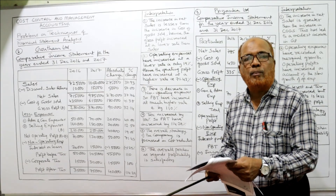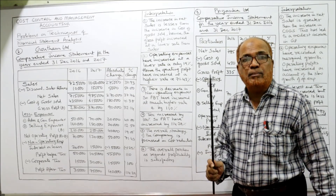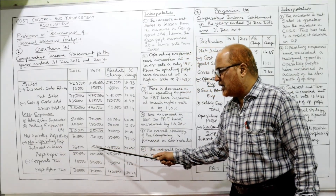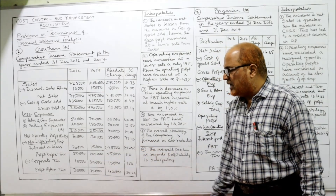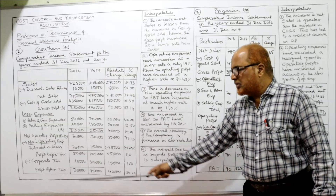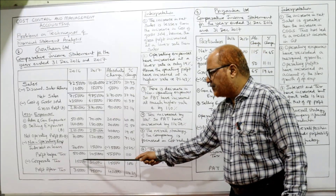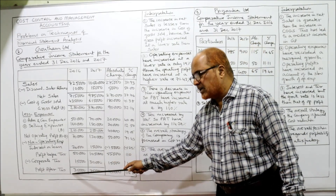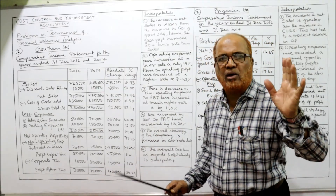From operating profit, deduct non-operating expenses. Non-operating expenses here are finance cost — interest on loan. Interest on loan: last year 20,000, current year 15,000. Deducting gives PBT (profit before tax): 50,000 and 1,05,000. From PBT, deduct corporate tax — last year 15,000, current year 30,000 — to get profit after tax: 35,000 and 75,000.